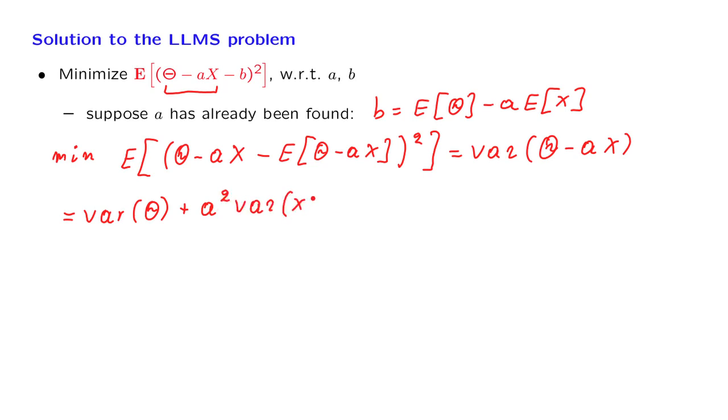And then we have a cross term. Because of the minus sign here, the cross term will have a minus sign. We have a factor of 2, and then we want the covariance of theta with ax. And because we have seen that covariances behave in a linear manner, we can pull a outside the covariance. And this is what we are left with.